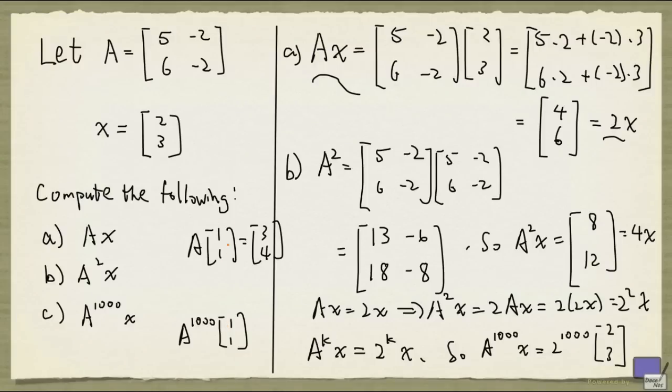But is there something that we can do here? It turns out that, yes, there is. And I'm going to do this by writing A differently. We're going to let P be the matrix 2, 1, 3, 2.